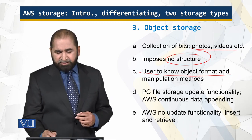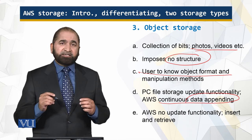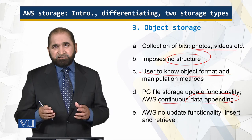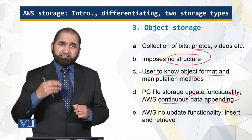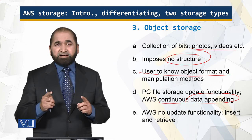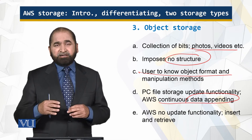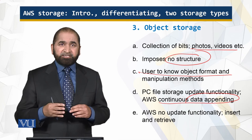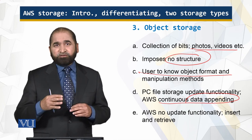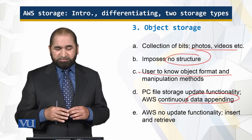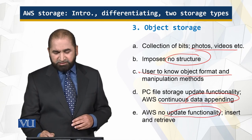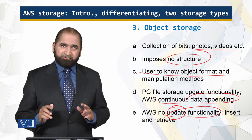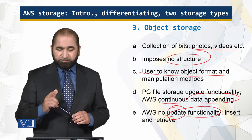AWS storage is continuous and data is appended — this is not like conventional storage where you can make changes directly. Data is appended, and we use a versioning approach to keep track of changes and retrieve them. There is no update functionality; the operations are insert and retrieve only — update is not there.